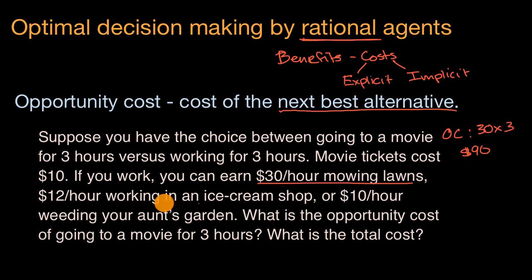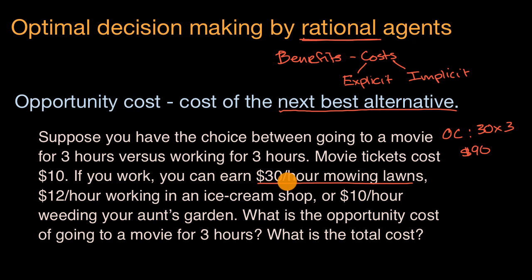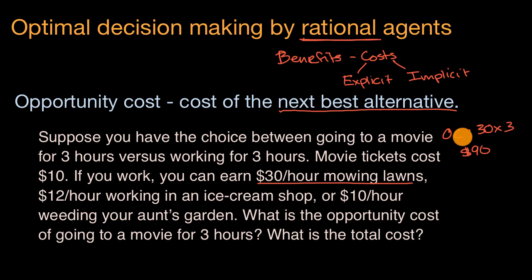Some of you might be asking about the $12 an hour for the ice cream shop or $10 an hour for weeding your aunt's garden. Those weren't the next best alternative — mowing the lawn was. Some people might think to add all of these together per hour and multiply by three, but you're not going to be able to do all three of these things; you have to pick one. So at a high level, the next best alternative is making $30 an hour mowing lawns, and that is the opportunity cost.